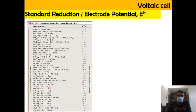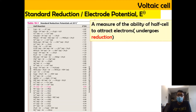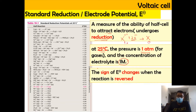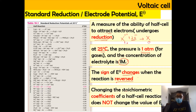This is the list of standard reduction potentials, which will be provided during exams and tests. Standard reduction potential is the ability of a half-cell to attract electrons — that is, to undergo reduction. It is measured at 25°C, 1 atm, and 1 molar concentration. Importantly, the sign of E⁰ changes when the reaction is reversed, but changing the stoichiometric coefficient of a half-cell reaction does not change the value of E⁰.